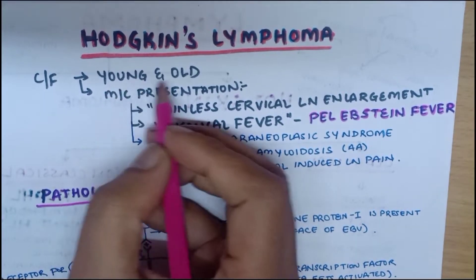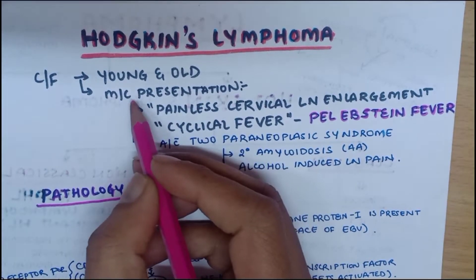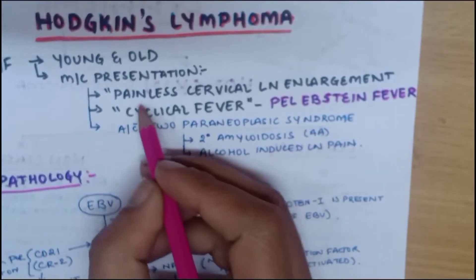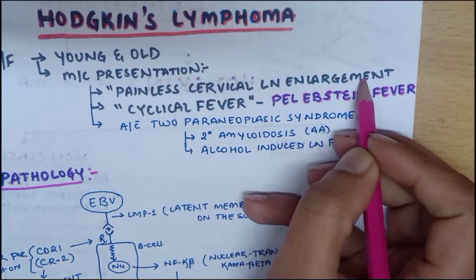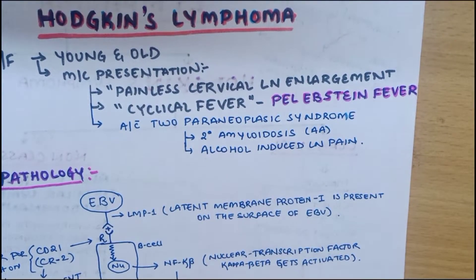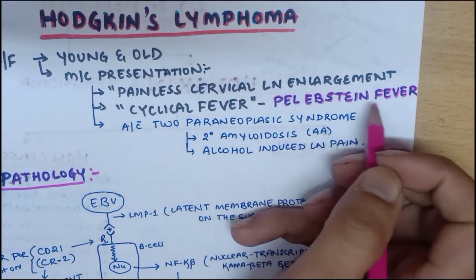Hodgkin's lymphoma is seen in young and old age groups. The most common presentation is painless cervical lymph node enlargement, along with cyclical fever known as Pel-Ebstein fever.